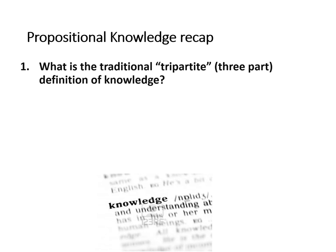This is the third lecture in the 'What is Knowledge' topic, focusing mainly on the responses to Gettier's objection. To set that up, let's have a quick look at what we've covered so far. The key points are going to be the tripartite definition of knowledge. The central definition that this whole topic revolves around with propositional knowledge is that knowledge is a justified, true belief.